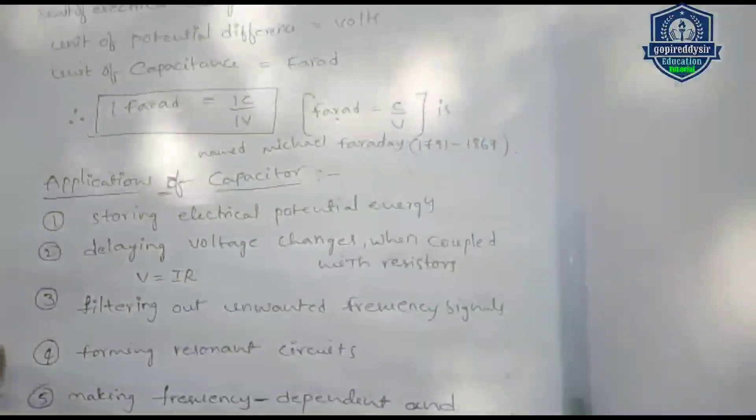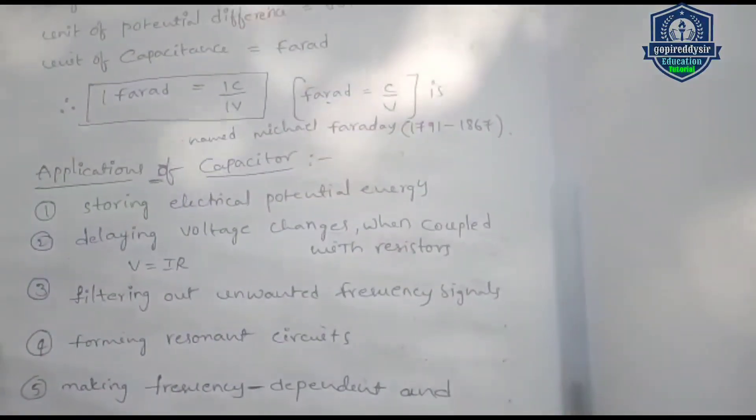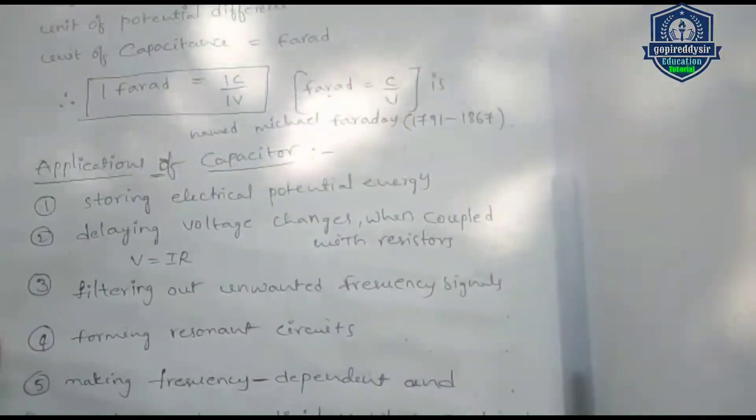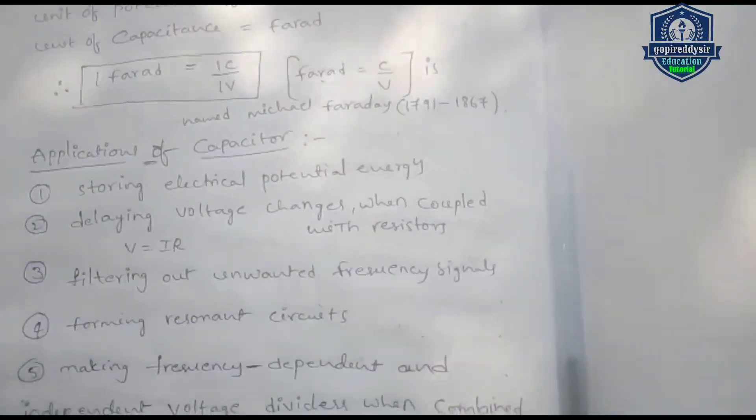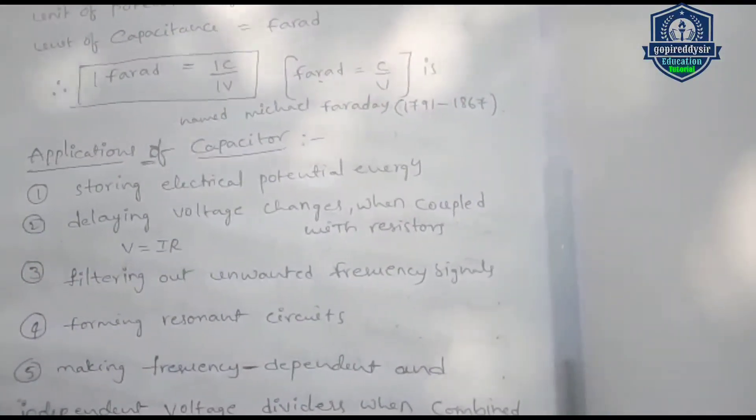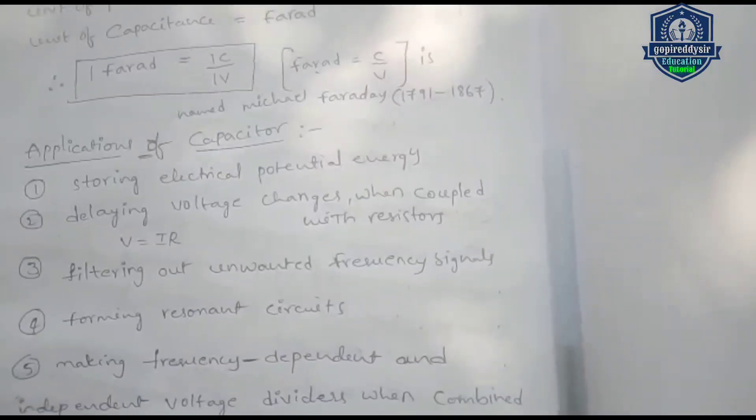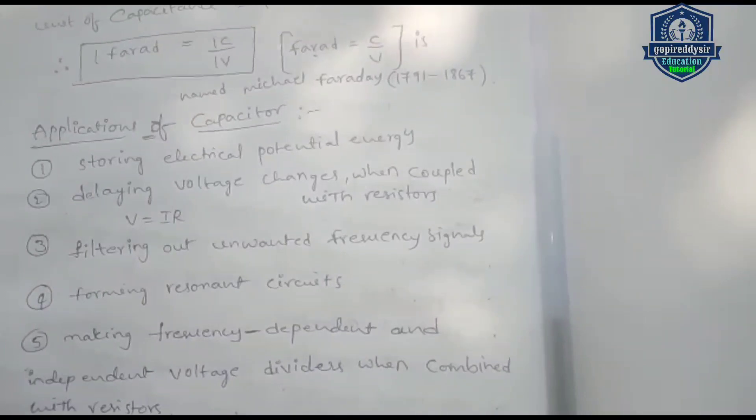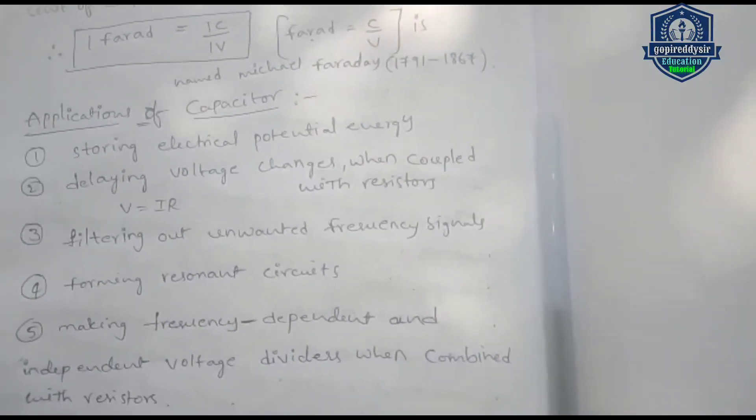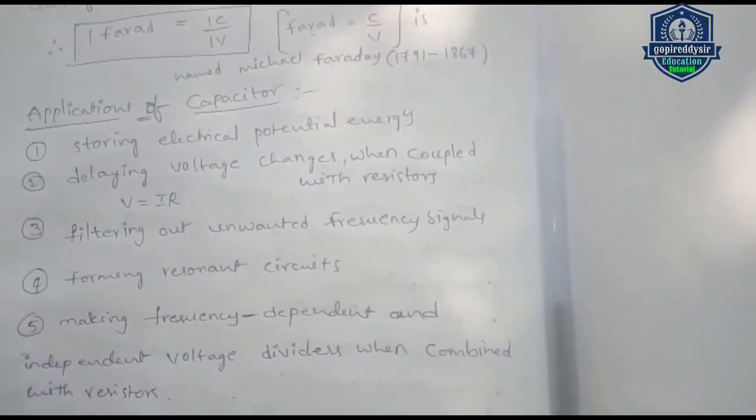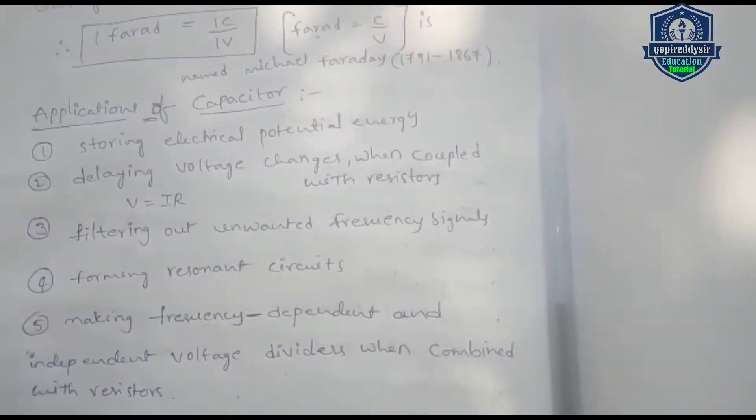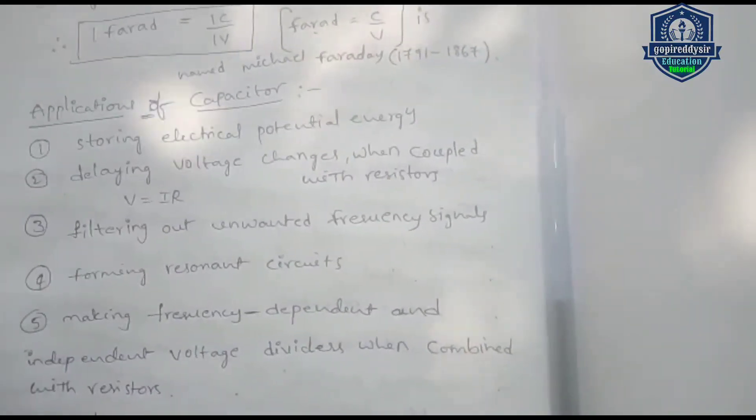Third is filtering unwanted frequencies. Unwanted frequency signals can be filtered using capacitors. Fourth one is forming resonant circuits. Capacitors are used in resonant circuits. Fifth is making frequency-dependent voltage dividers. Frequency-dependent and independent voltage dividers can be made using capacitors with resistors.